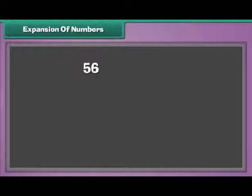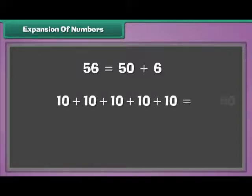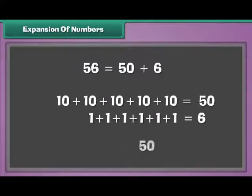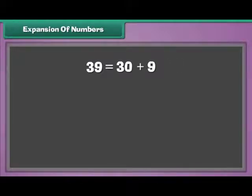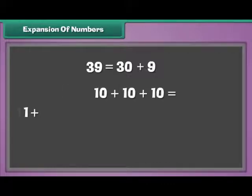Seven is at the one's place and four is at the ten's place. Let us break two-digit numbers into tens and ones. Fifty-six can be written as fifty plus six — there are five tens and six ones in fifty-six. Similarly, thirty-nine can be written as thirty plus nine — there are three tens and nine ones in thirty-nine.